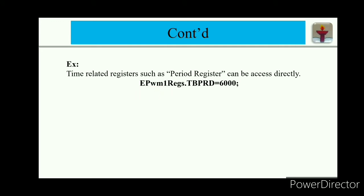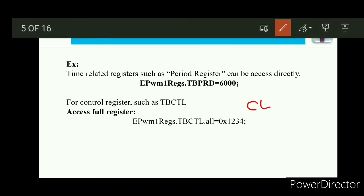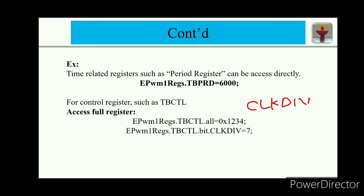For control registers such as the time-based control register, you can define the full length of the registers using EPWM1registers.tbctl.all. With the 'all' keyword, you define the full 16-bit register value. If you don't want to define the full length and want to assign individual bits, for example to define the clock division, you can write in bitwise manner: EPWM1registers.tbctl.bit.clockdivision = 7.